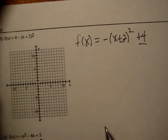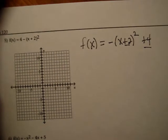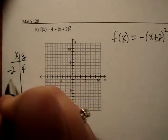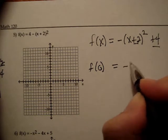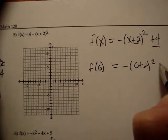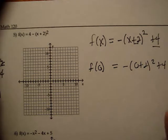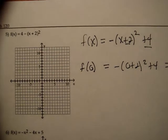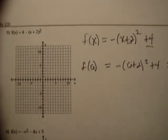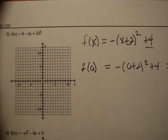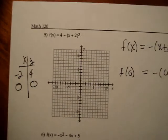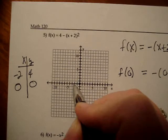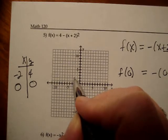Next I find my intercepts. Let's start by finding the y-intercept. Remember to find the y-intercept you let x be 0. So f of 0 is equal to negative 0 plus 2 squared plus 4, and if you do the math you get 0. So 0, 0 is my y-intercept. Let me plot what I've got: 0, 0 and negative 2, positive 4.